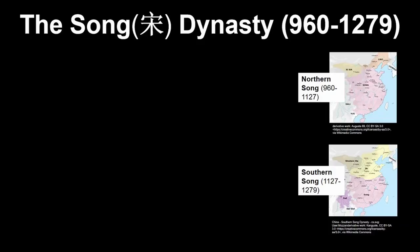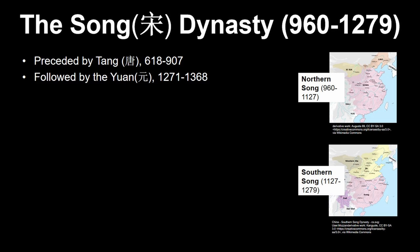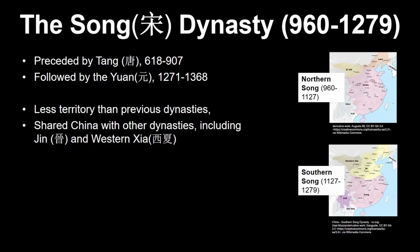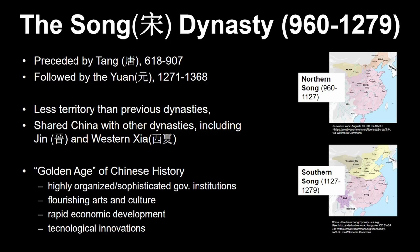Our first key term is the Song dynasty. It started in 960 and lasted until 1279. It was preceded by the Tang and followed by the Yuan, divided into the Northern Song and Southern Song periods. It's a bit small in territory compared to other dynasties like the Sui and the Tang. Throughout its history, the Song dynasty was actually sharing China with other dynasties such as the Jin dynasty and the Western Xia. But it is still widely considered a golden age for China because of its highly organized government institutions, rapid economic development, flourishing arts and culture, and technological innovations.